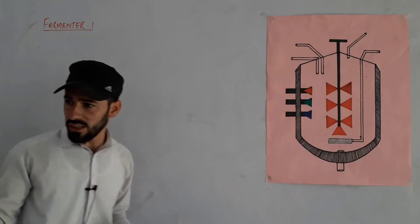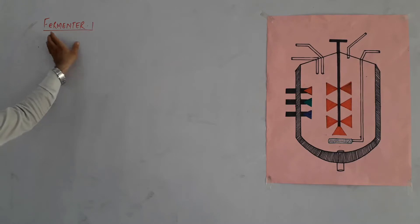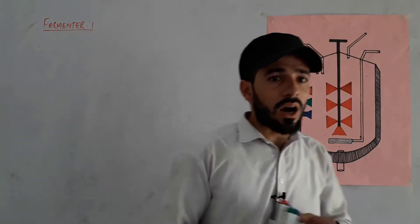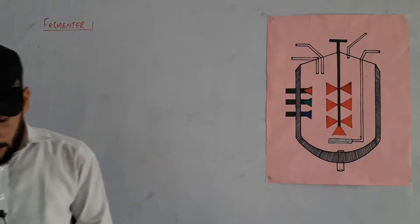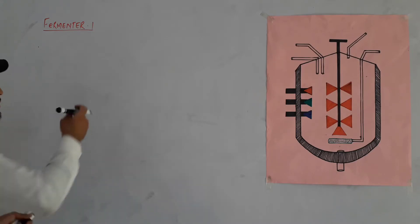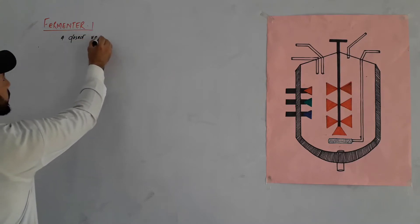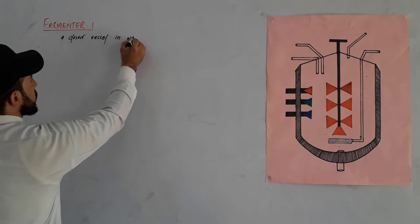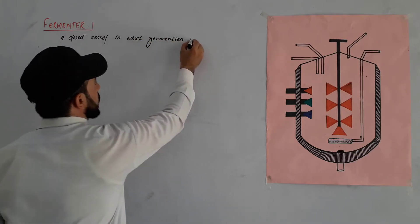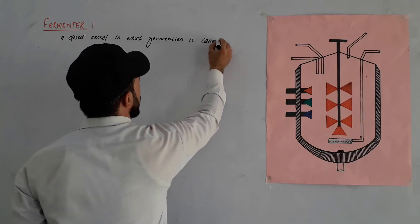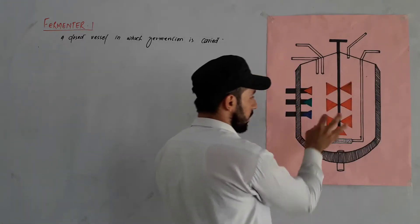The fermentation process requires a special vessel in which fermentation can take place. That vessel is called a fermenter. A fermenter is a closed vessel in which fermentation is carried out or performed.